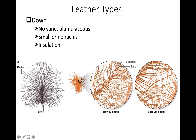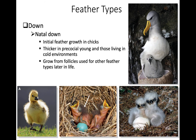Down has no vane, no integrated pennaceous region — all plumulaceous, with a very small or absent rachis, and its function is insulation. The first down a bird is born with is natal down, which can be very prominent in precocial birds hatching with a large amount of feathers, but some altricial birds have minimal natal down and must grow it in their first few days. Natal down tends to be thicker in precocial young, especially those in cold environments.